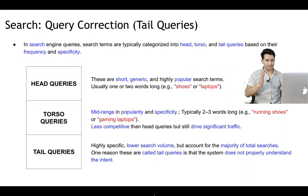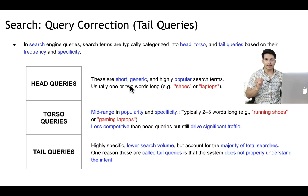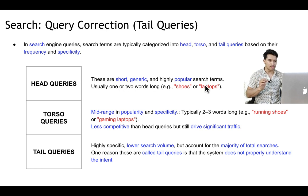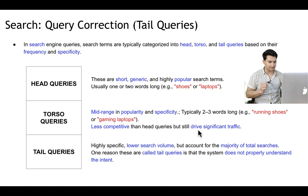First, I'll talk about search. Search is an age-old problem, and normally in search engines, queries are classified as head, torso, and tail queries. In e-commerce, head queries are the highly popular search terms — short, generic, and highly popular, for example, shoes or laptops. Torso queries are mid-range in popularity, typically two to three words long, for example, running shoes or gaming laptops. They are less competitive than head queries but drive significant traffic.